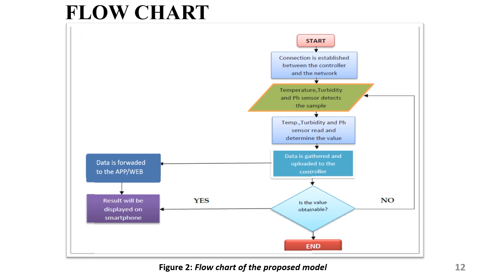This is the flowchart of our project. When we start the module, a connection is established between the controller and the network. Then all the sensors detect the samples and read and determine the values. Data is collected and uploaded to the controller. If the data exceeds the certain threshold value, then the data is forwarded to the app and web, and the result is displayed on the smartphone. If it does not exceed the threshold value, then the process continues.